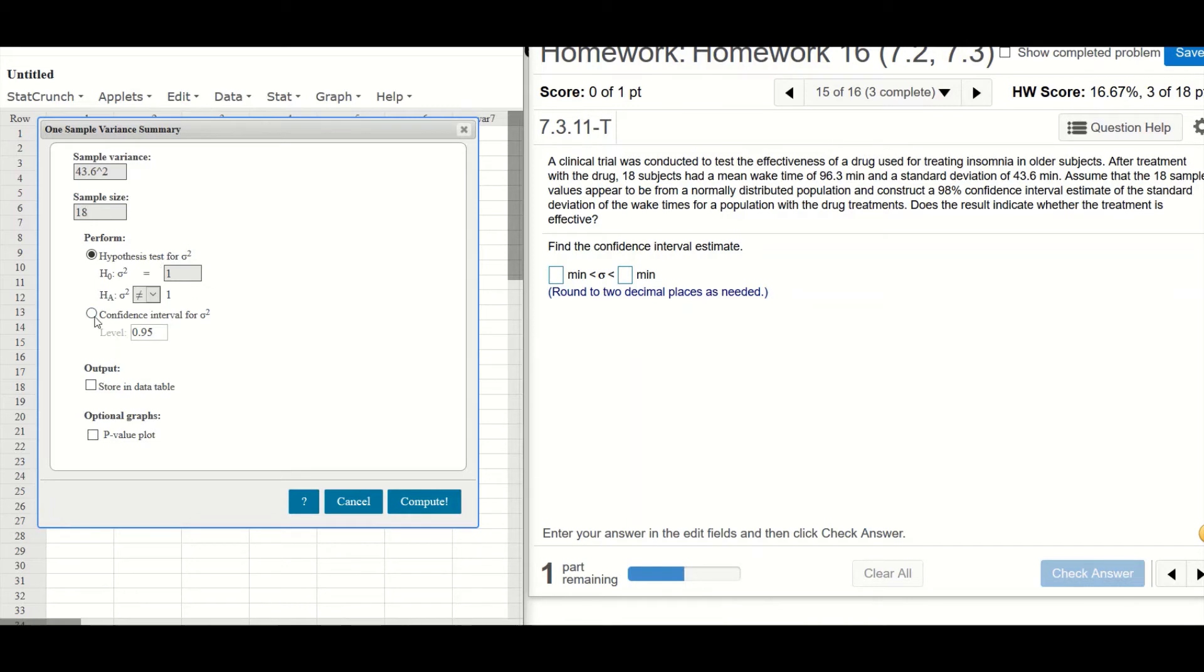Sample size is 18. Okay, I want confidence interval. All right, the confidence level is 98%. So 0.98.